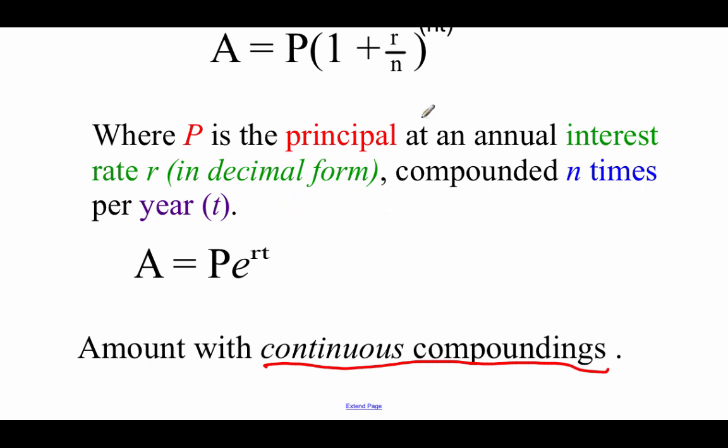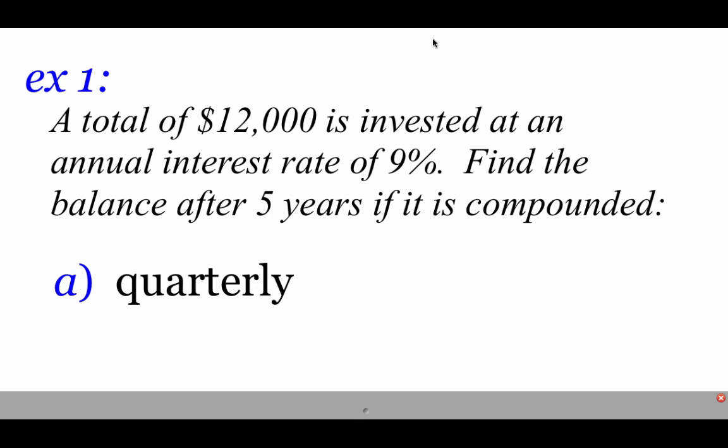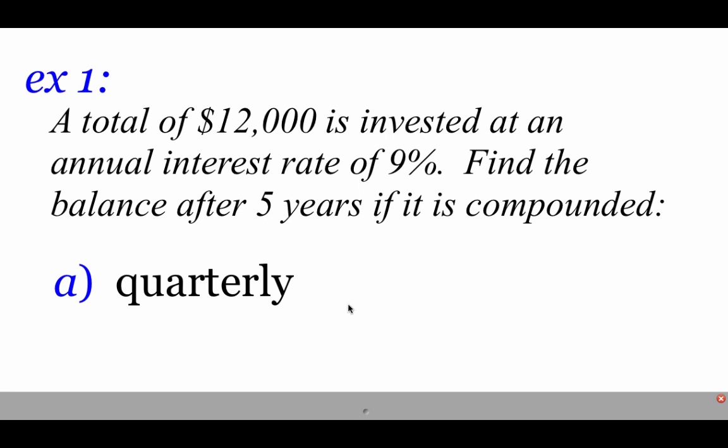In this first example, we're going to be dealing with an initial investment of $12,000. We're going to get an interest rate of 9%, and we're going to find our balance after five years doing a couple different kinds of compounding. The first thing we're going to look at is compounding this quarterly. First thing I'm going to do is just write out that formula from the last page: A equals P times 1 plus R over N to the power of N times T. And what I'm going to do is start plugging in some numbers.